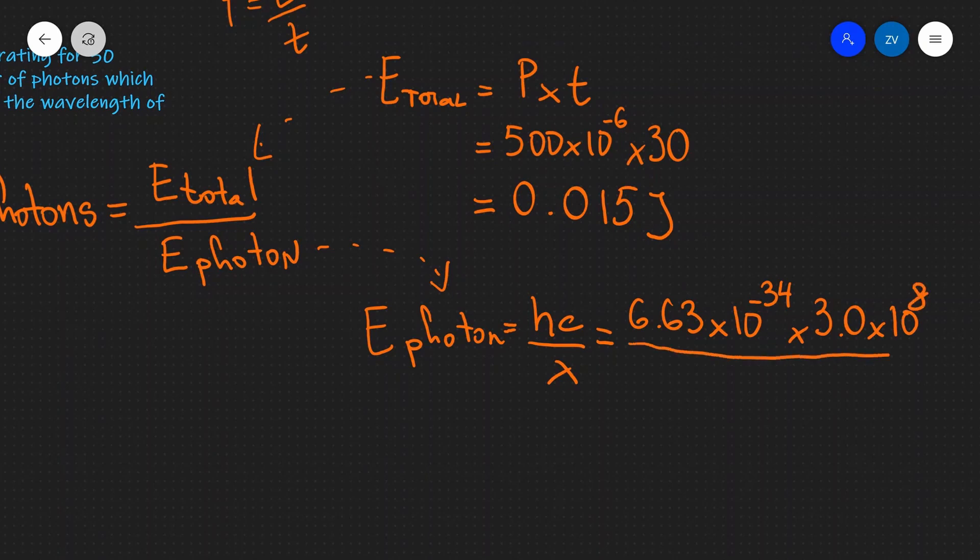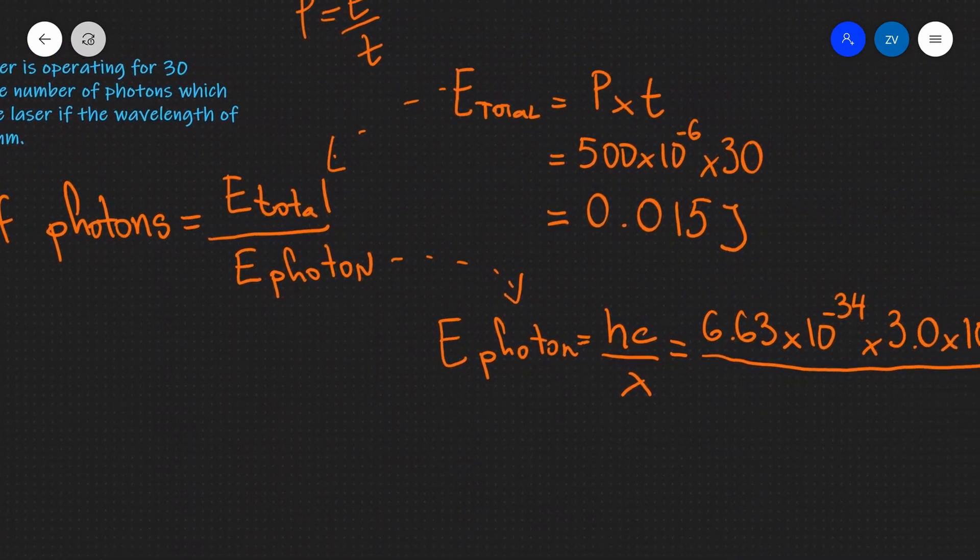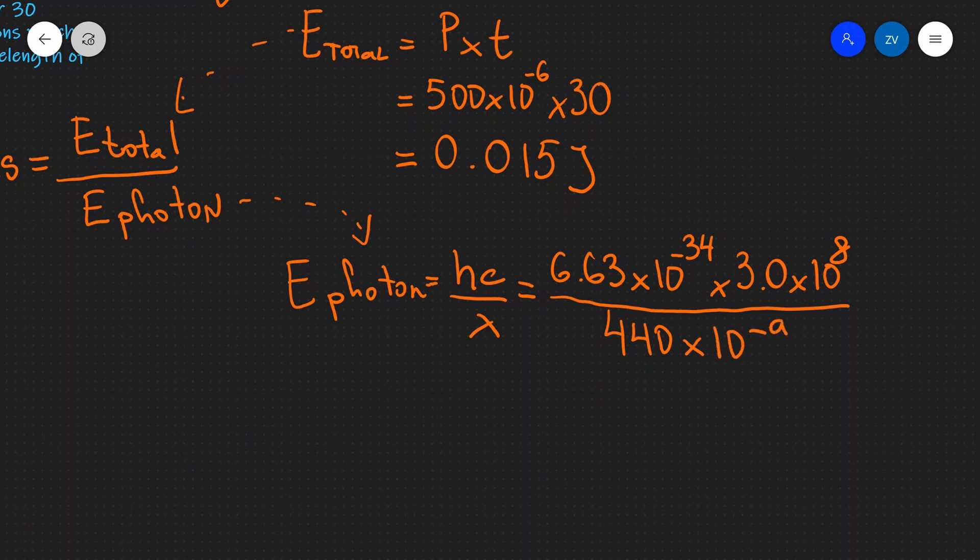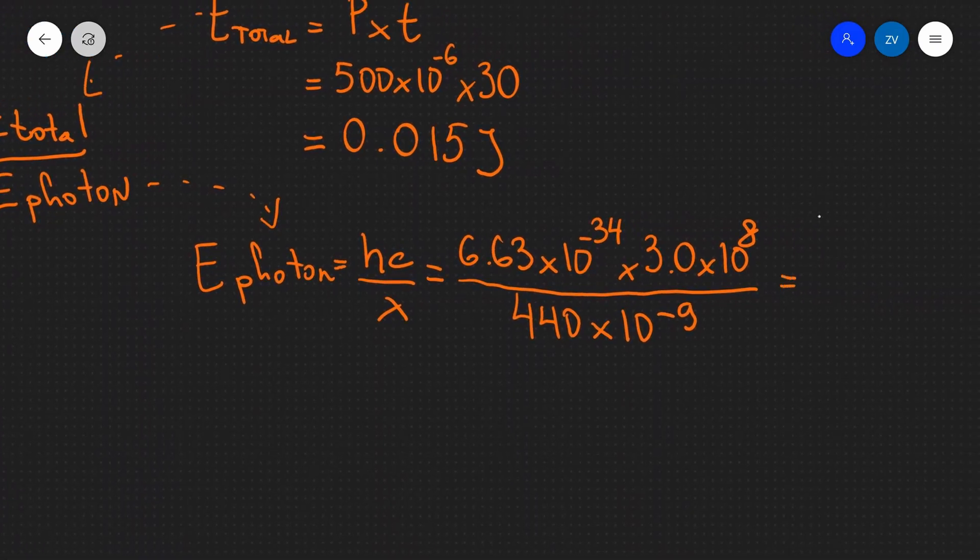And we're going to divide that by the wavelength, which is 440 nanometers. So that's 440 times 10 to the power of minus 9. And what we need to do then is input that into a scientific calculator. So times 3.0 times 10 to the 8, divide that by 440 times 10 to the power of minus 9. And the answer is 4.5 times 10 to the power of minus 19 joules.